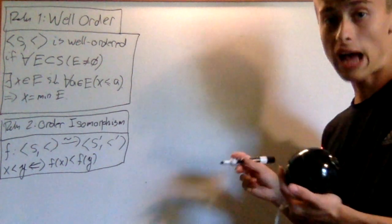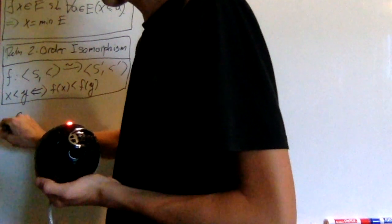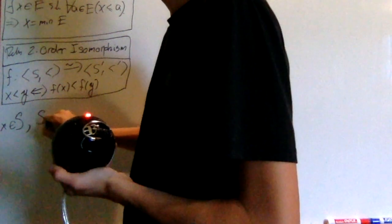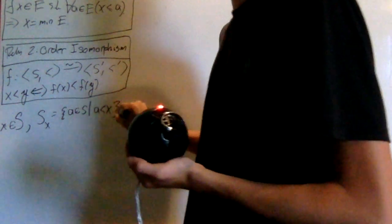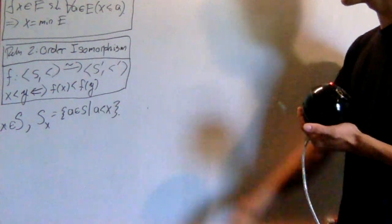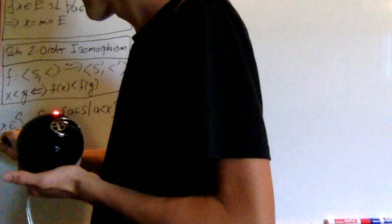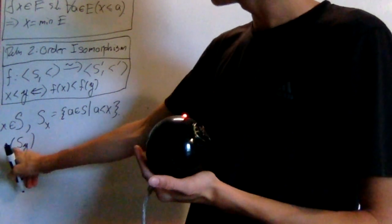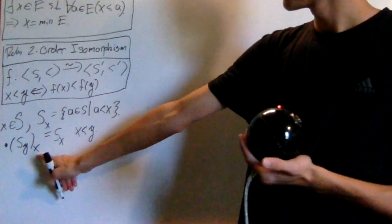An important object we'll be dealing with a lot is something called a segment. If I have some ordered set s and I pick an element x from it, I can create what is known as the segment s_x, which is the set of all a in s such that a is less than x. These are actually really important when analyzing well-ordered sets and ordered sets in general, especially under order isomorphisms. One property is that if s_y is a segment of s, then the segment of s_y at x is just s_x, for x less than y — so segments can combine like that.